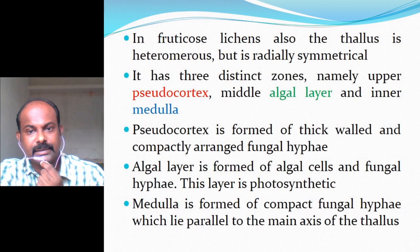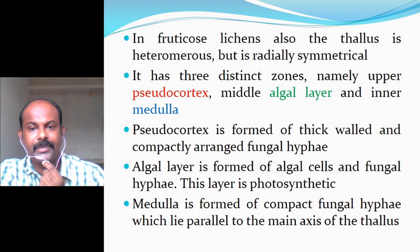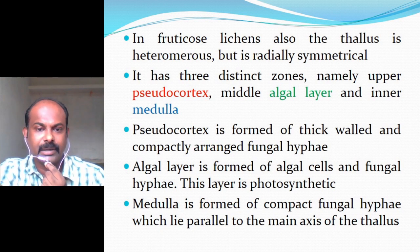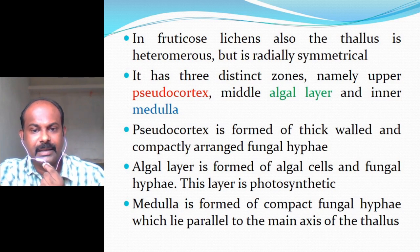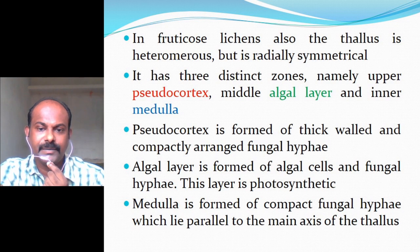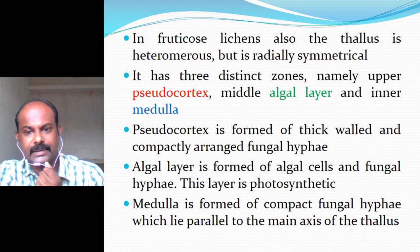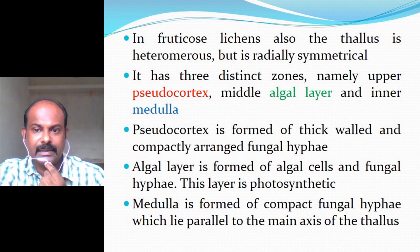In fruticose lichens the thallus is also heteromerous but radially symmetrical. It has three distinct zones: upper pseudocortex, middle algal zone, and inner medulla. The pseudocortex is formed of thick-walled and compactly arranged fungal hyphae. The algal layer contains algal cells with fungal hyphae and is photosynthetic. The medulla is formed of compact fungal hyphae lying parallel to the main axis. In some lichens such as Usnea there is a central core in addition to the surrounding medulla.